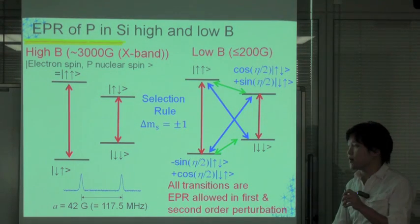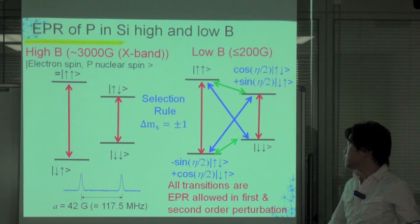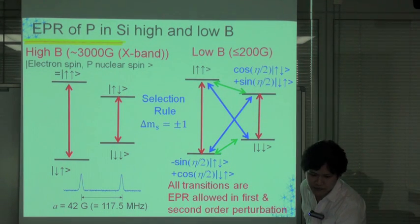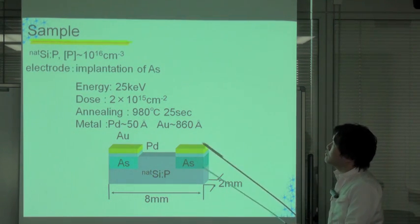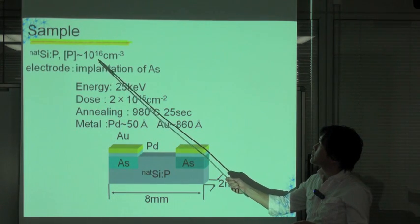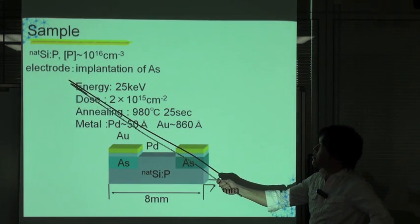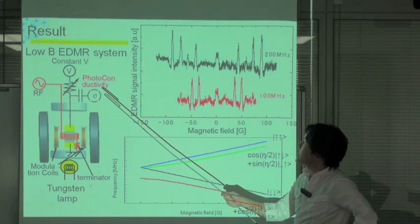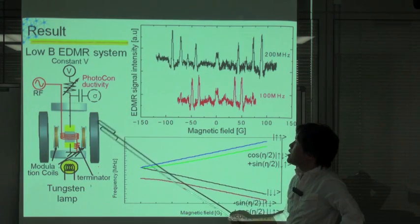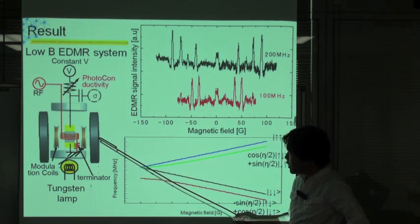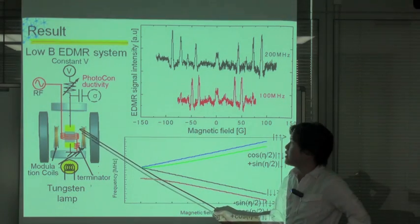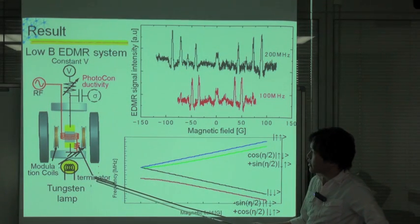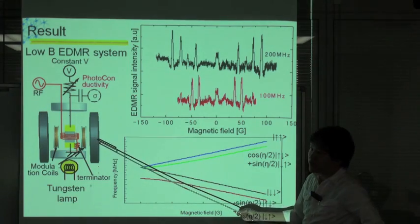We have constructed an electrically detected magnetic resonance — in short, EDMR — spectrometer to detect these transitions, because the signal intensity does not depend on the static magnetic field. The sample employed is silicon doped with phosphorus at a concentration of 10^16 per cubic centimeter. Electrical contacts are made by ion implantation of arsenic. There is a sample between electrical magnets, and a coil is wrapped around the sample for RF irradiation. The sample is cooled down to 5K. A tungsten lamp is used to excite electron-hole pairs continuously, and photoconductivity with sweeping magnetic field is recorded.